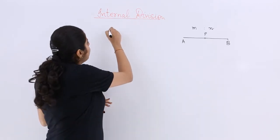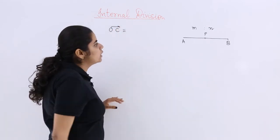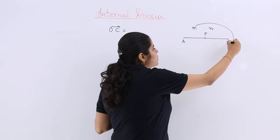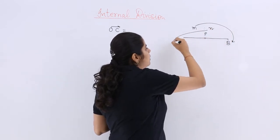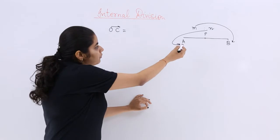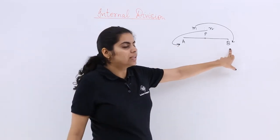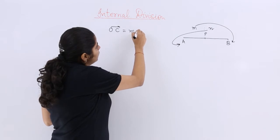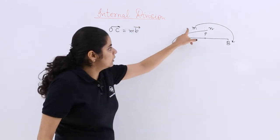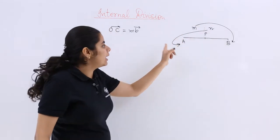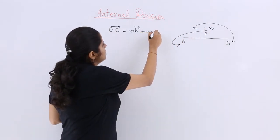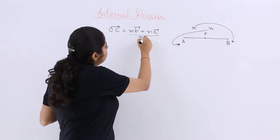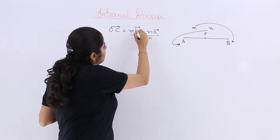So if the origin is O, then it is OC vector which is equal to what? Which can be given by M multiplied by the position vector here plus N multiplied by the position vector here. So if A vector is given here, this is B vector, then it is M multiplied by B vector plus N multiplied by A vector upon the sum of ratios which is M plus N.